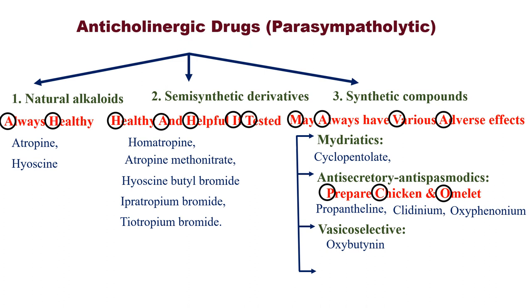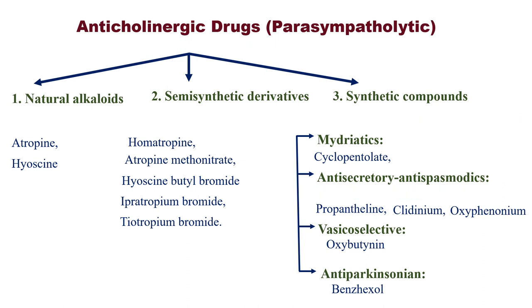Finally, A stands for Anti-parkinsonian. If you see a patient with Parkinson's disease, he is unable to move or walk properly and always needs a car. Which car? Benz. So remember: the Parkinson's patient needs a Benz car — the drug is Benzhexol. If you like this video, please subscribe and share. Thank you.